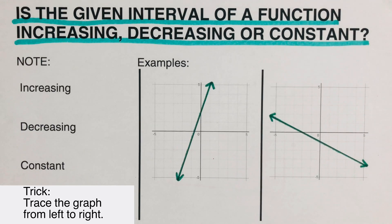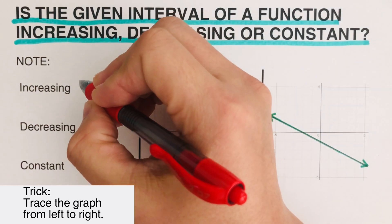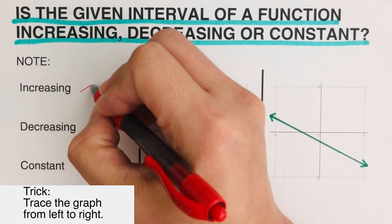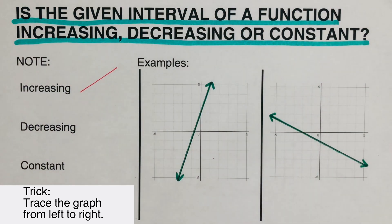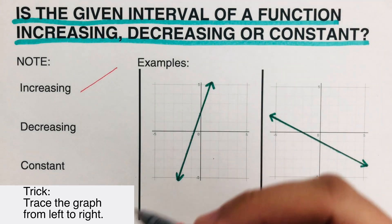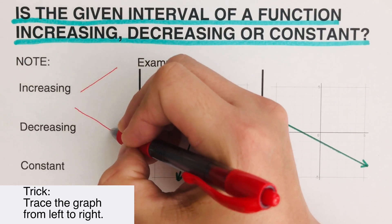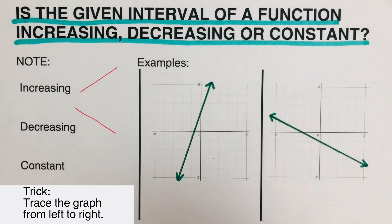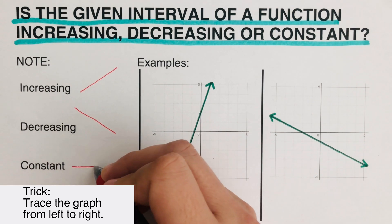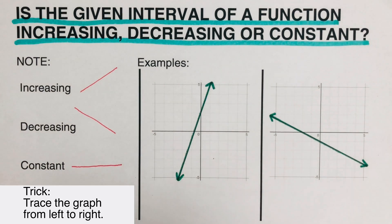Here's a trick on how to determine increasing, decreasing, and constant at a given interval: we trace the graph from left to right. If the graph is going uphill from left to right, then it is increasing at that interval. If it's going downhill, then it is decreasing. And if the y-value does not change — like a horizontal line — then it is constant.